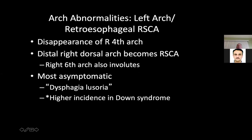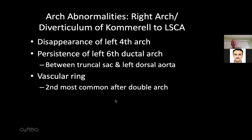Arch abnormalities: a left arch with a retroesophageal right subclavian artery is caused by disappearance of the right fourth arch while the left fourth arch remained. The distal right dorsal arch becomes the right subclavian artery and the right sixth arch also involutes. This is mostly asymptomatic — you might get some dysphagia with food — and there's a higher incidence in Down syndrome. The right arch with a diverticulum of Kommerell to the left subclavian artery is caused by disappearance of the left fourth arch and persistence of the left sixth ductal arch; this is the most common vascular ring after a double arch.